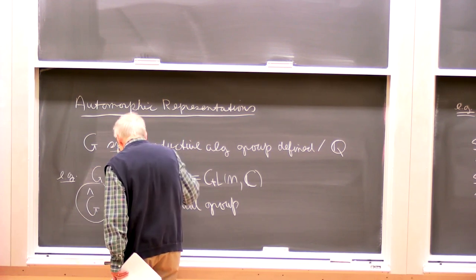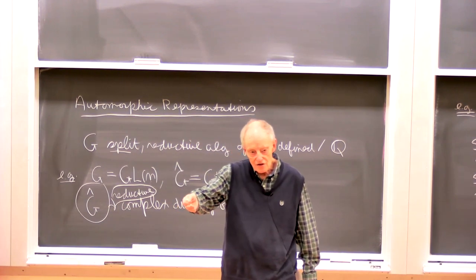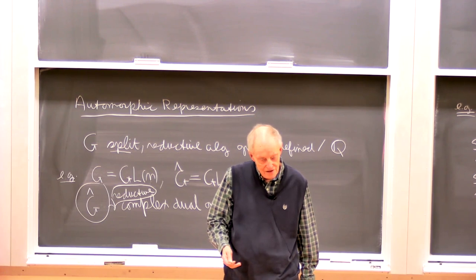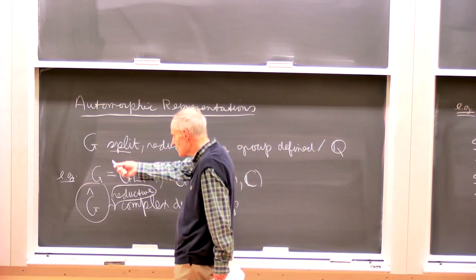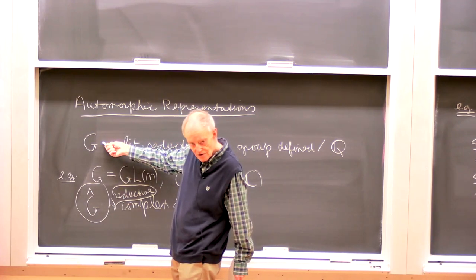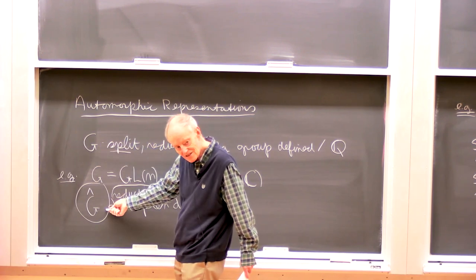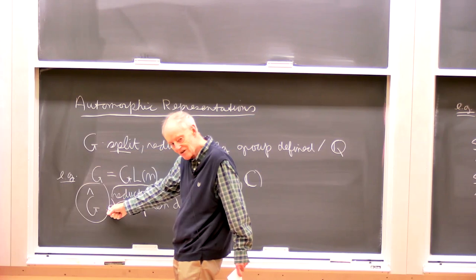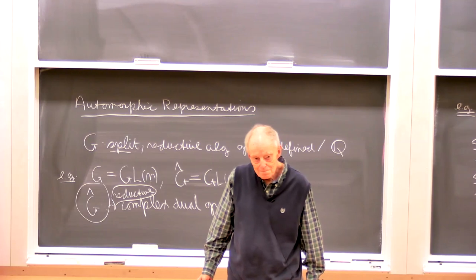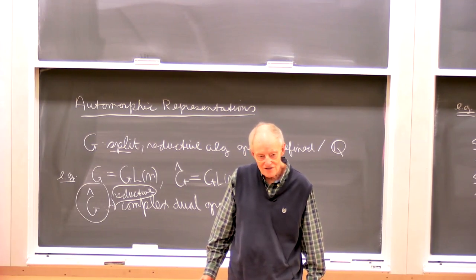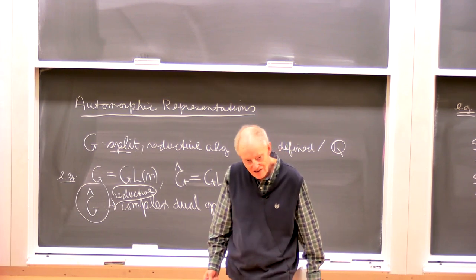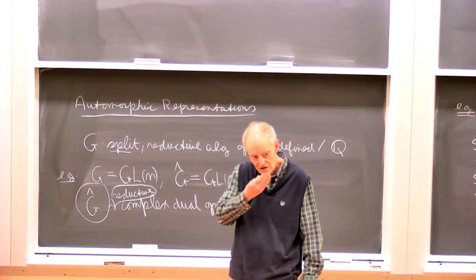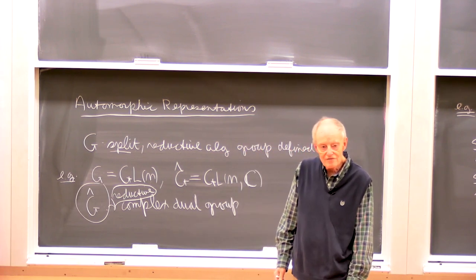Reductive is just semisimple times a commuting torus. So the center is also reflected: if you're taking a simply connected group, that has a center; then G-hat has to be bigger — it will be an adjoint group. If this is an adjoint group, then G-hat has a larger center. G-hat will have a torus in it, and it will be the dual torus. There's a notion of a dual torus given any algebraic torus, and that's closer to the actual definition of the dual group.